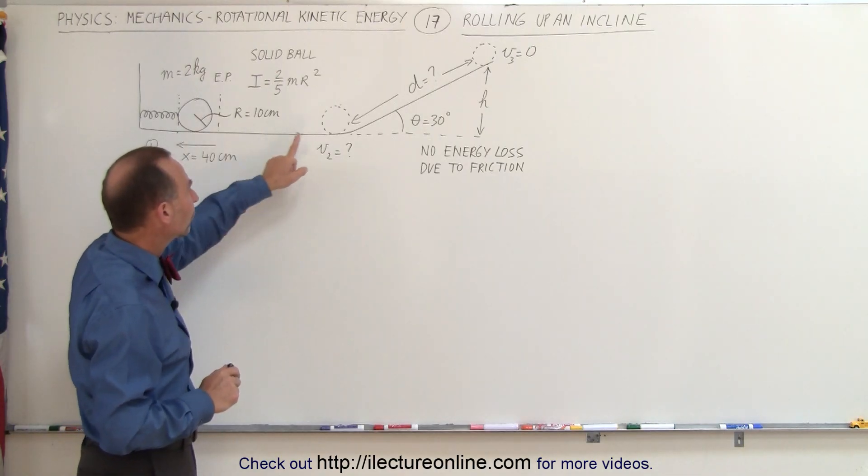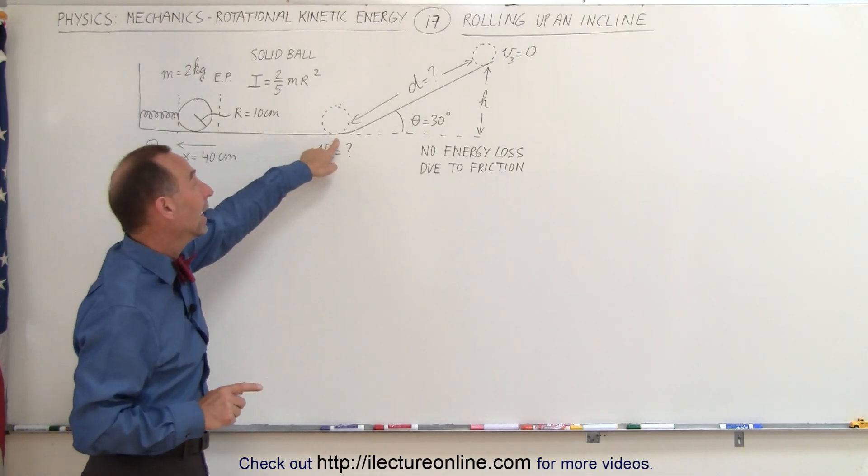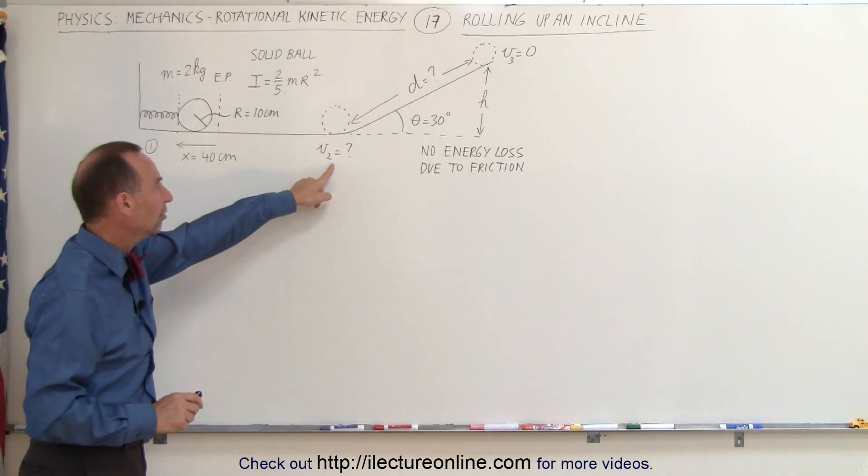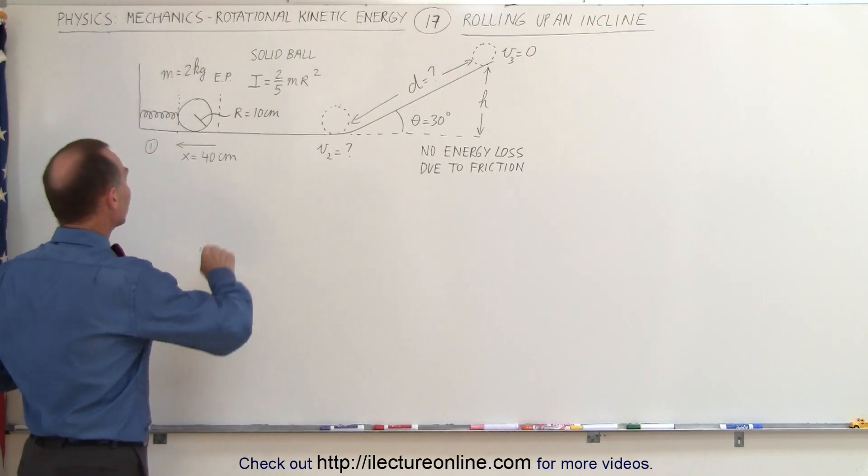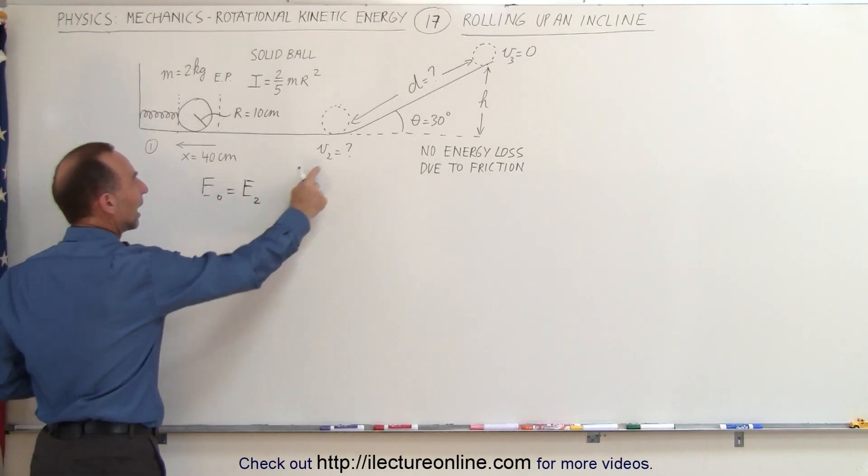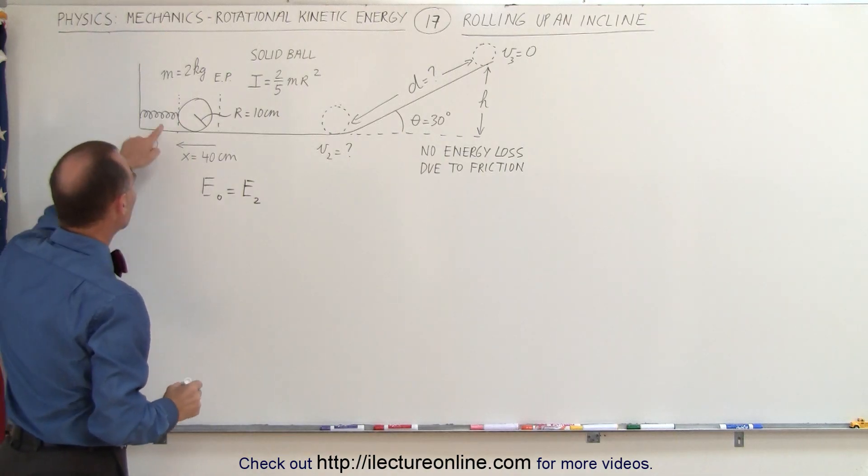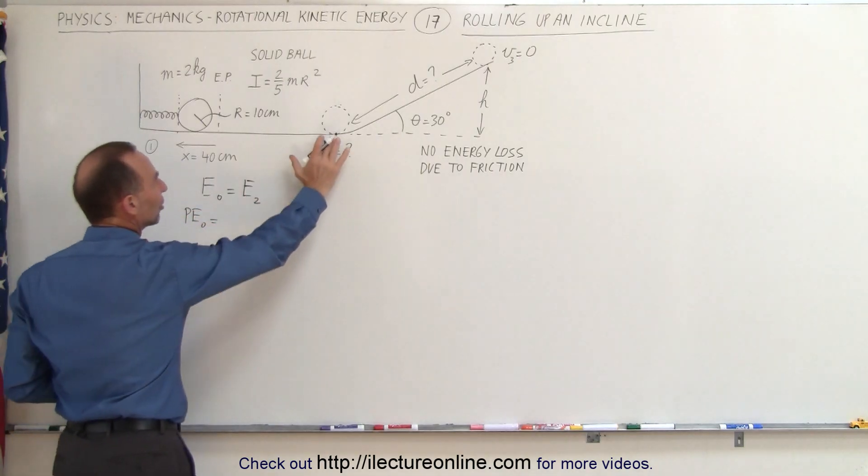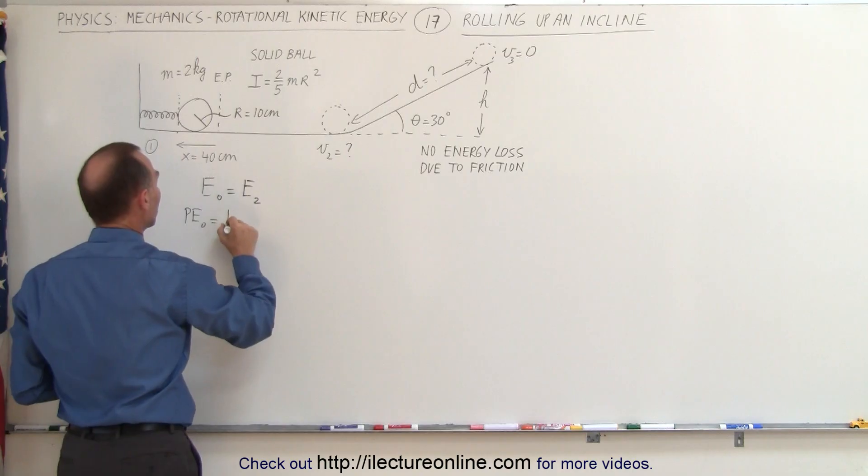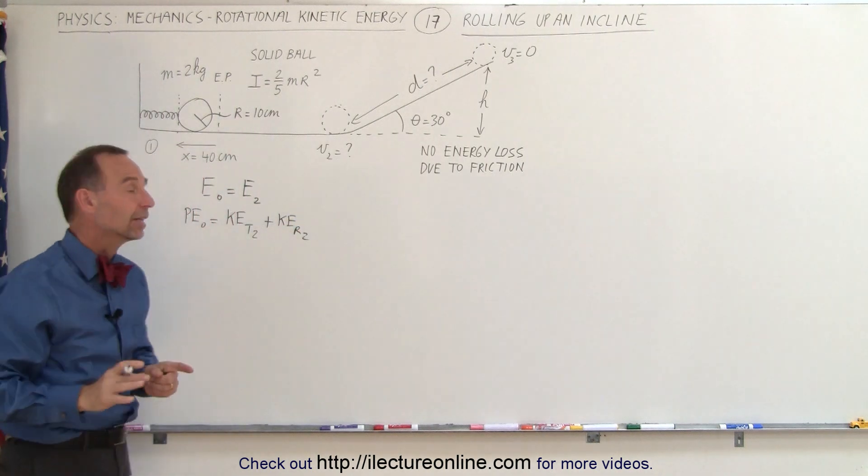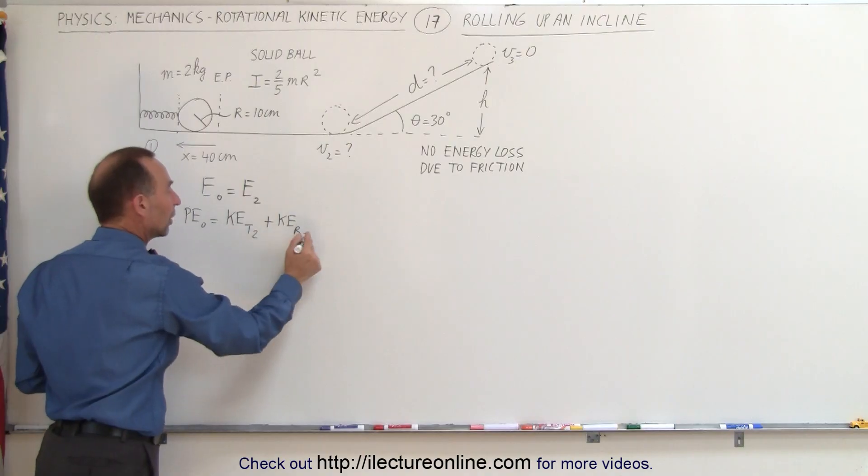Now, first of all, what we're going to do is find the velocity at the bottom of the incline, and then we're going to find out how high it will go up the incline before it comes to a complete stop. So first, what is the velocity when it gets to this point? We use the equation where the initial energy must equal the final energy. The final energy will be energy at point 2 right there. The initial energy is the stored energy in the spring, and then the final energy at this location will be kinetic energy translational at 2 plus kinetic energy rotational at 2 because it will have both translational and rotational kinetic energy.